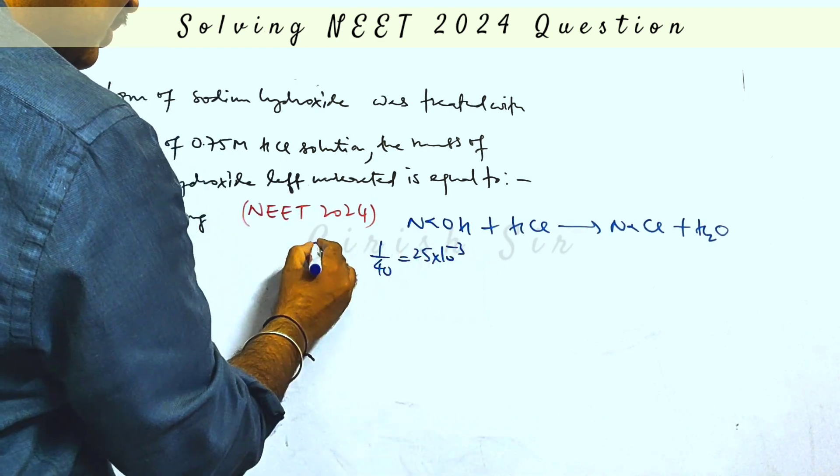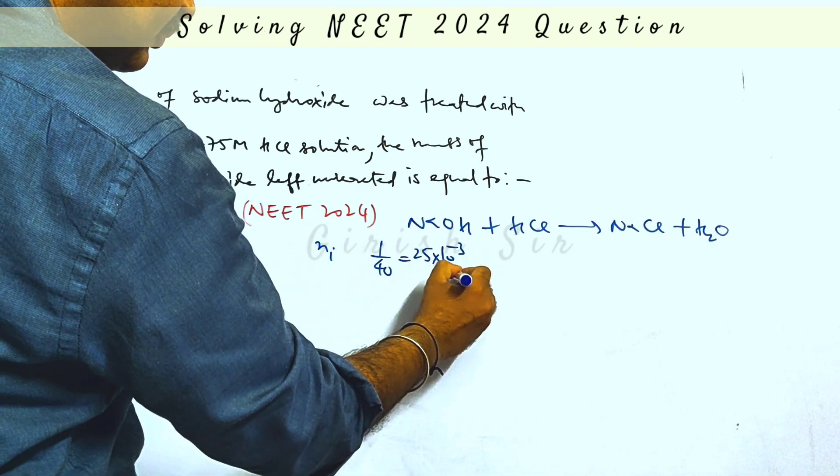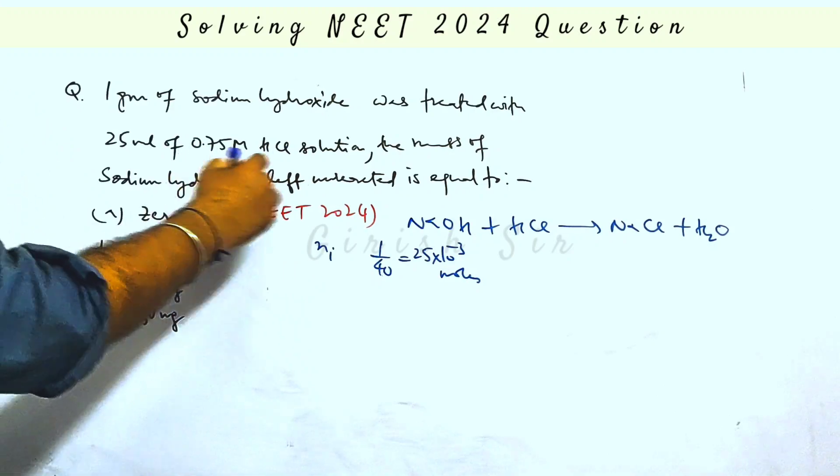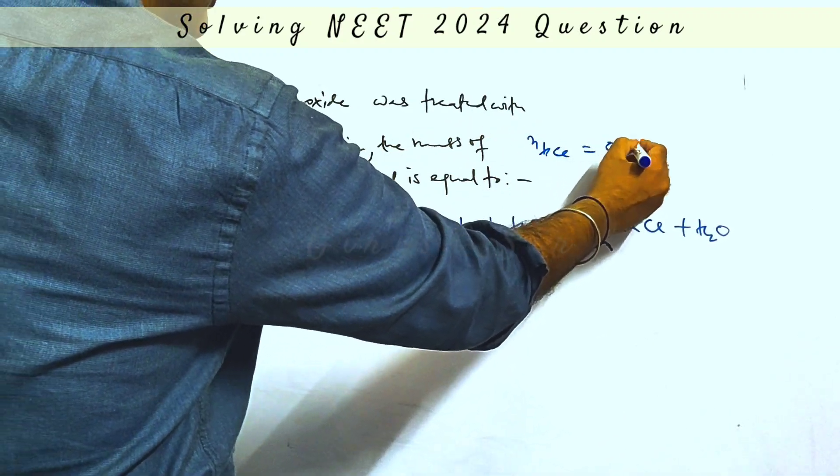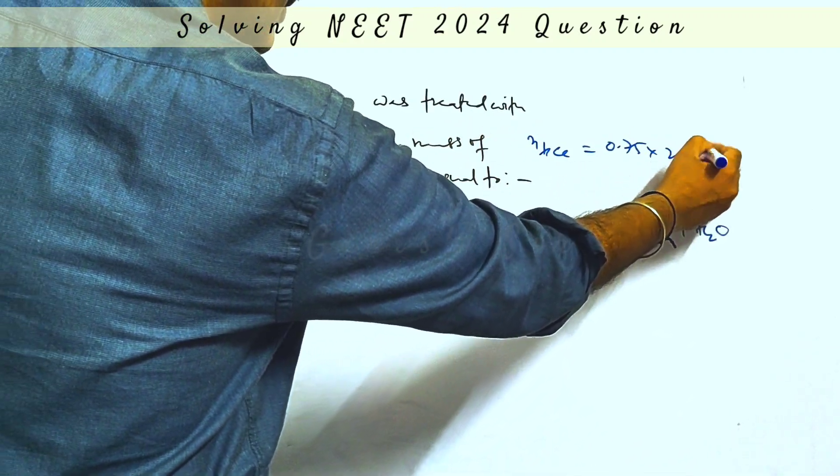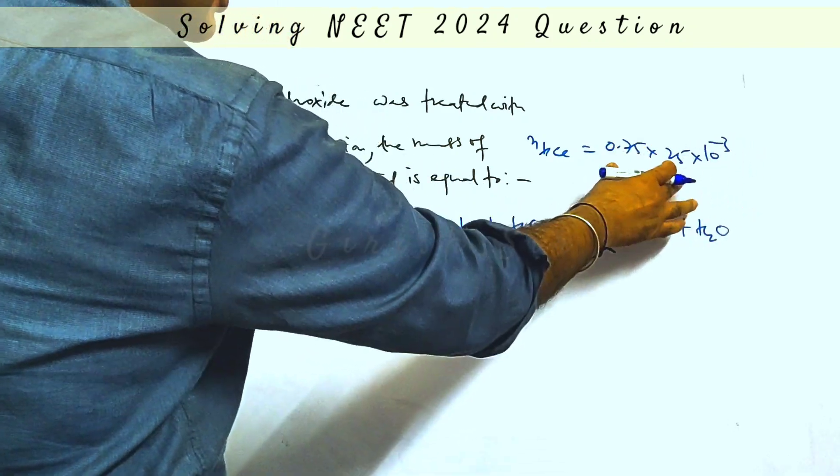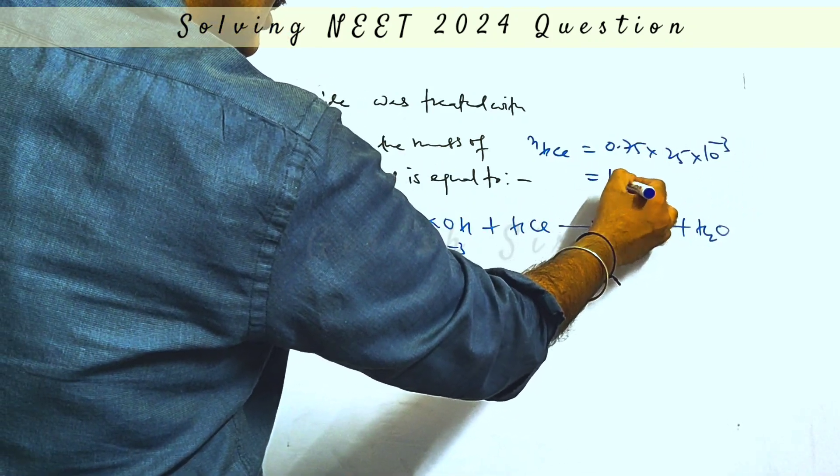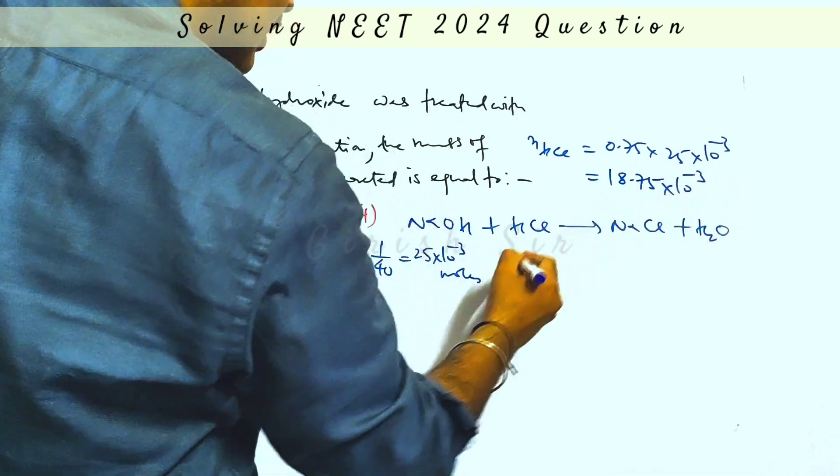Initial moles for HCl: the number of moles would be molarity 0.75 into volume 25 mL. Changing it to liters, you will get number of moles as 18.75 × 10^-3.